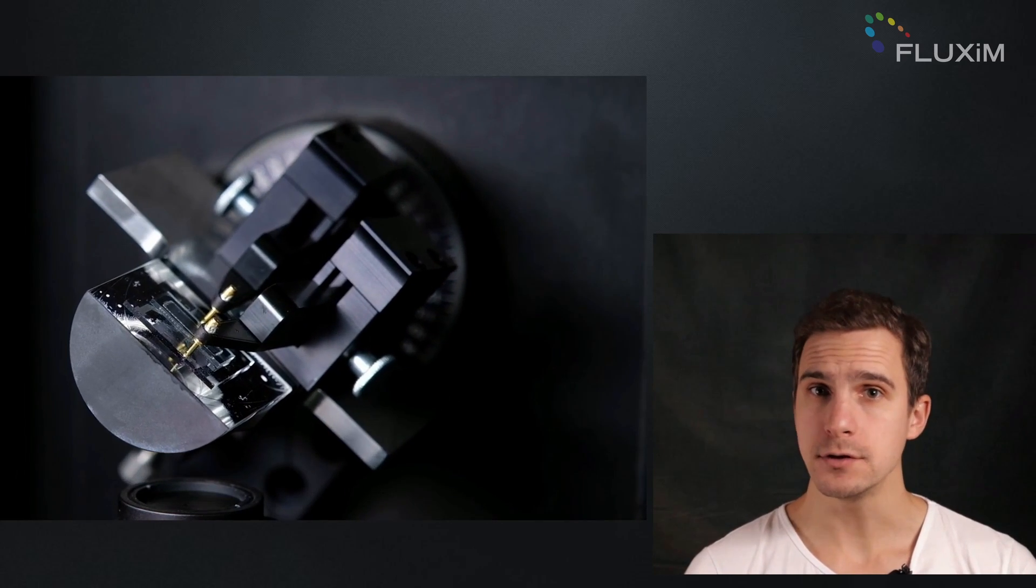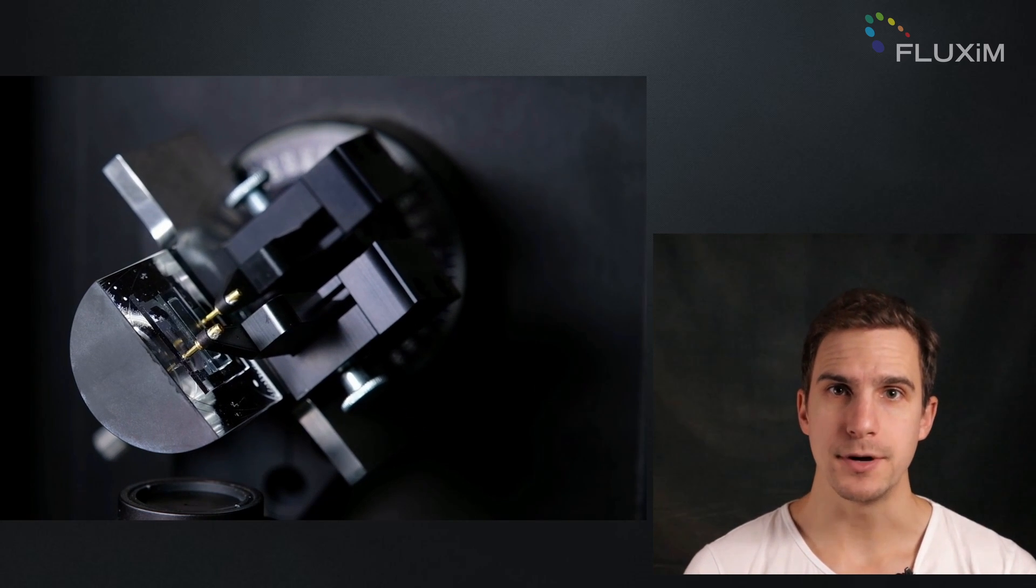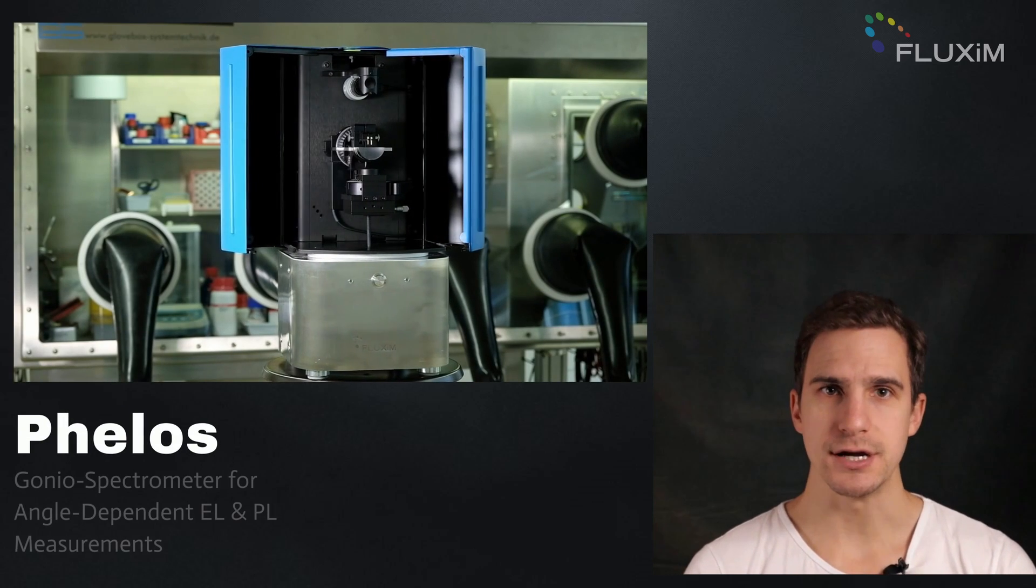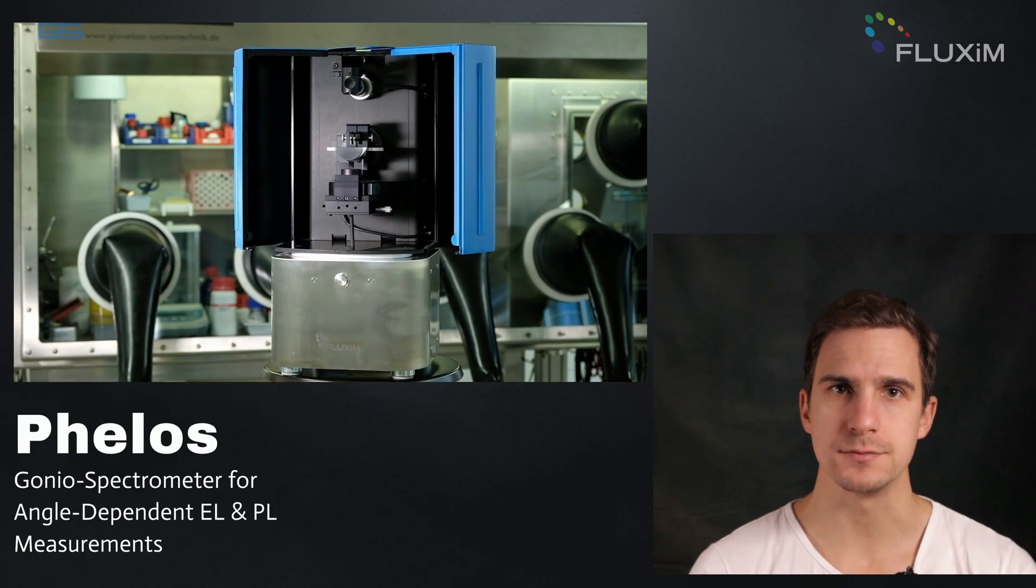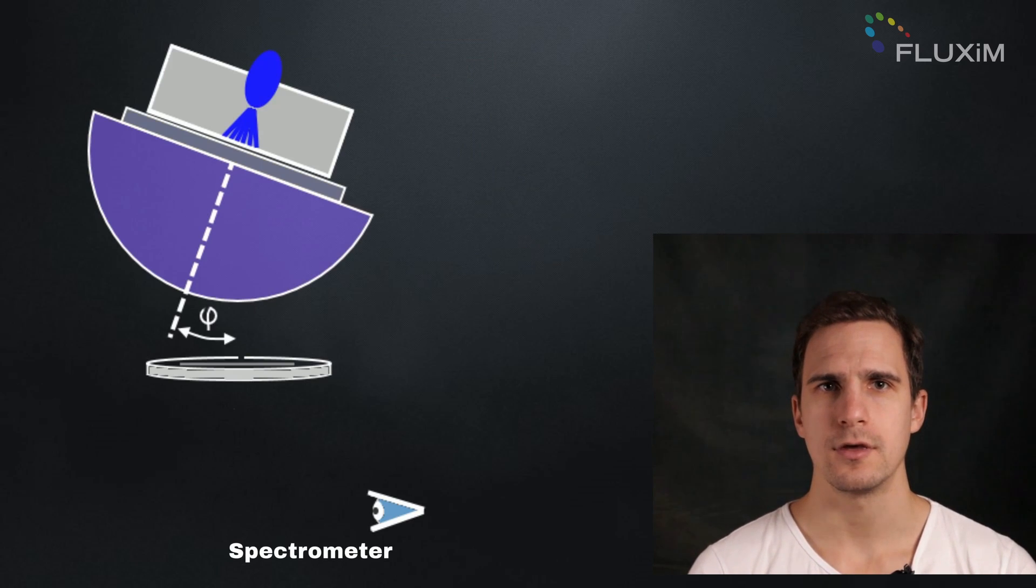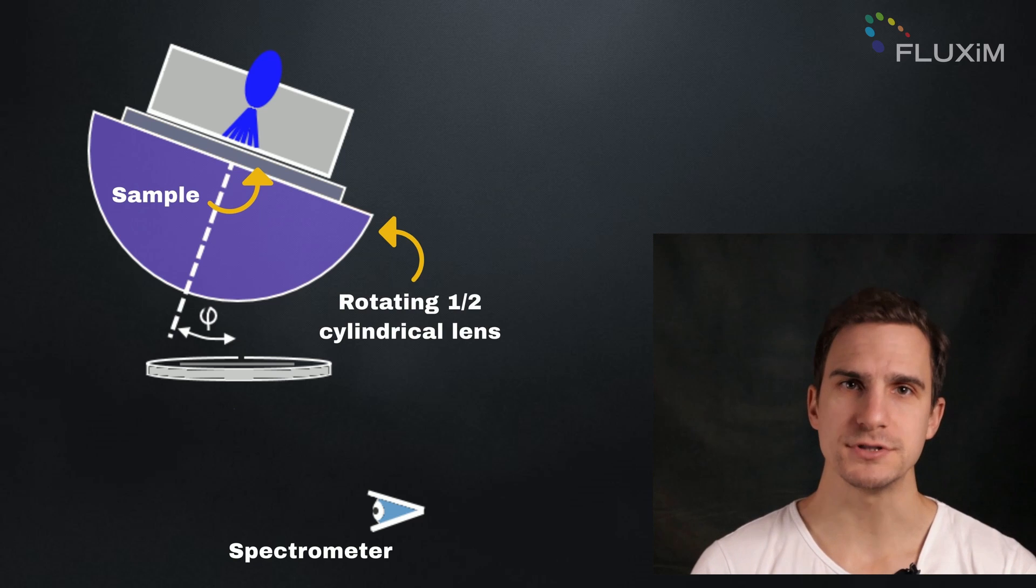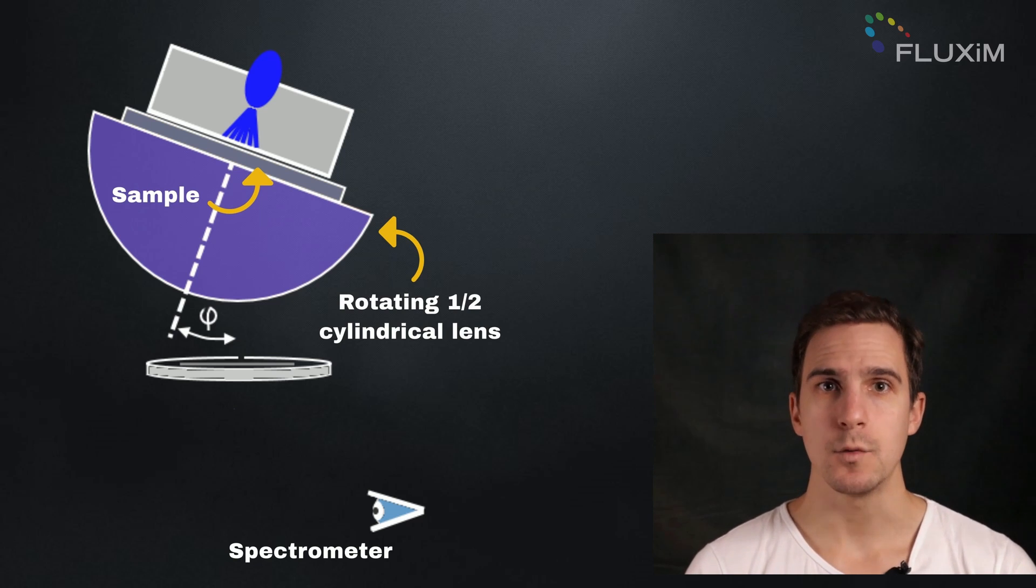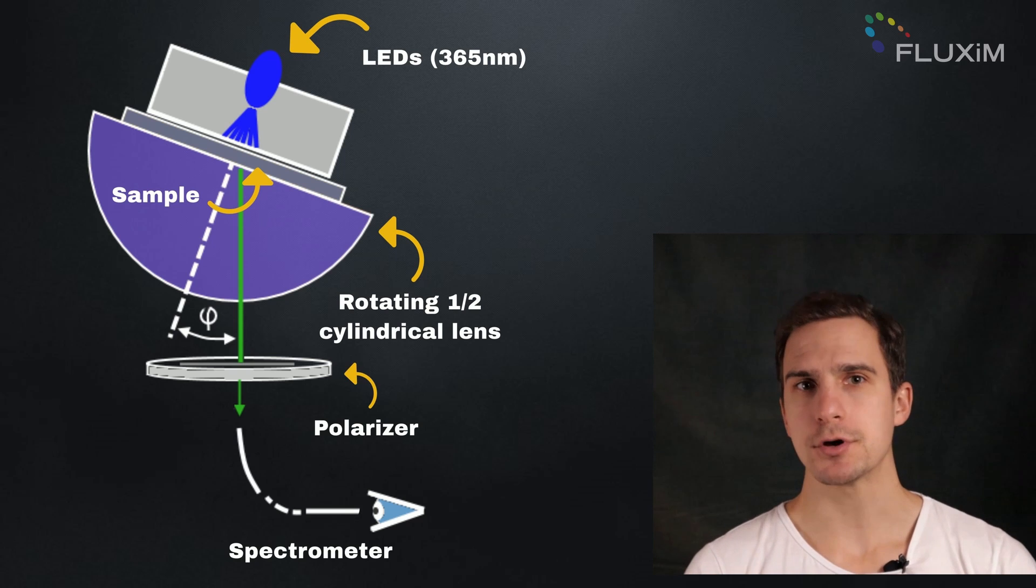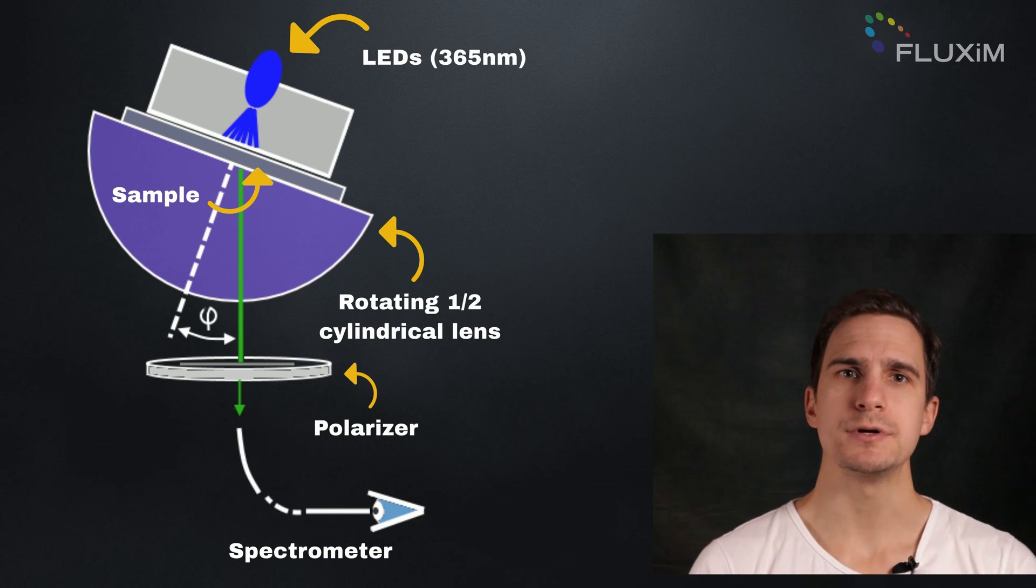Angle-dependent photoluminescence is a reliable measurement method to determine the orientation of the dipoles. Tools like Thelos are designed to characterize light-emitting devices and thin films over varied emission and polarization angles. The sample is mounted on a rotating half-cylindrical lens while excited with LED light, and emission is recorded by a detector equipped with a polarizer.